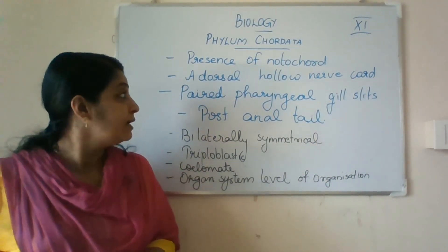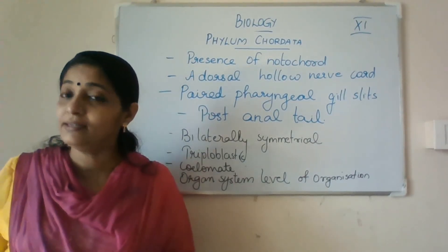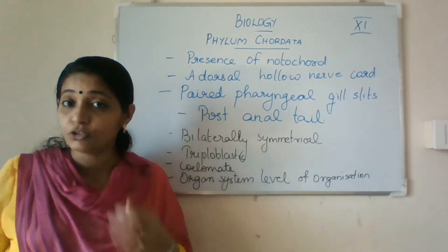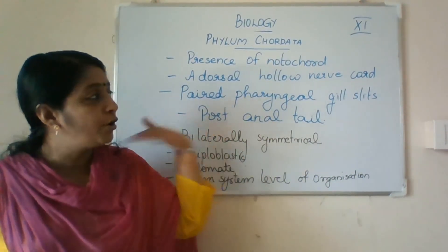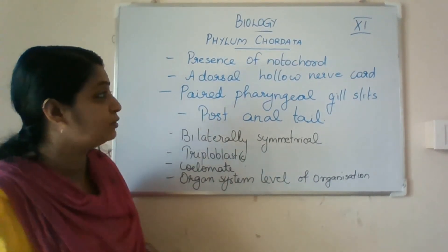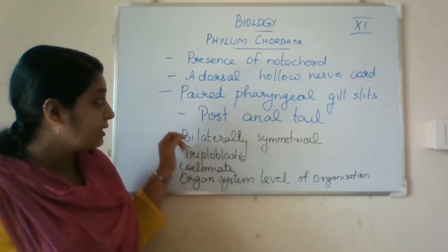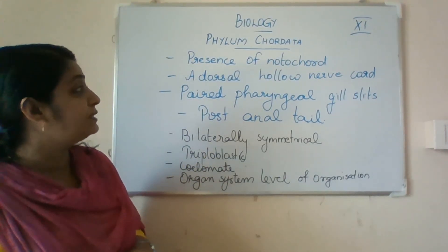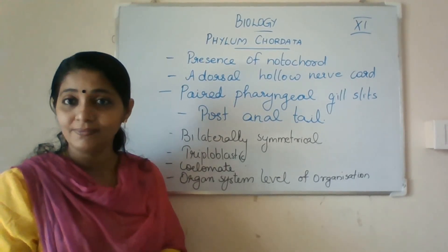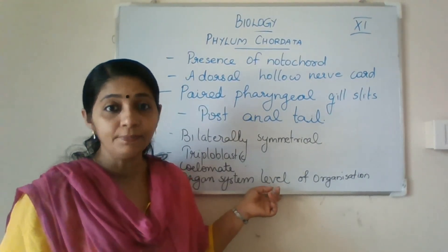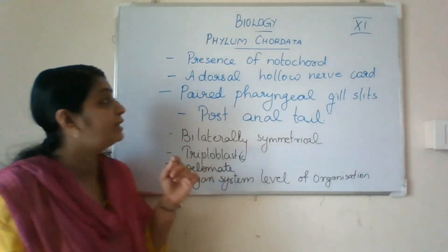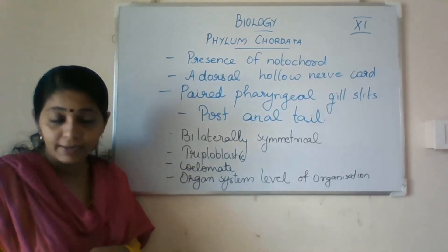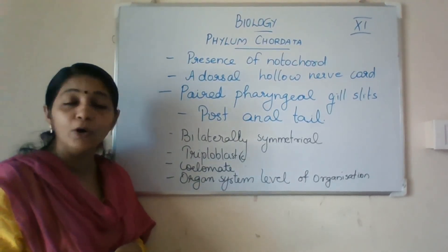The third feature is paired pharyngeal gill slits, which develop into the lungs. Near the region of the pharynx, the gill slits are present. In higher organisms, these become lungs. Then post-anal tail is the next feature of Phylum Chordata. So the main defining features are: presence of notochord, presence of a dorsal hollow nerve cord, paired pharyngeal gills, and post-anal tail.